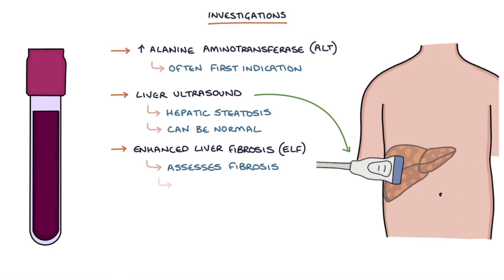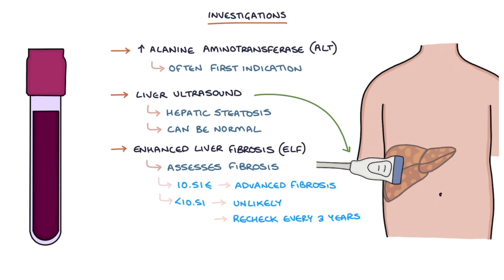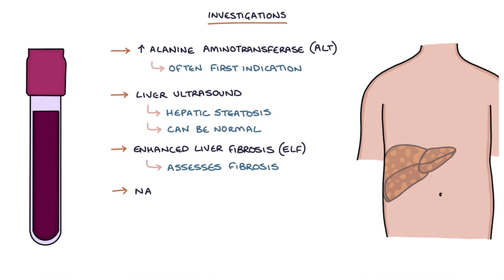A result of 10.51 or above indicates advanced fibrosis, and a result under 10.51 indicates unlikely advanced fibrosis. The NICE guidelines recommend rechecking every three years in NAFLD. The non-alcoholic fatty liver disease fibrosis score, or NFS, is another option for assessing for liver fibrosis in these patients.